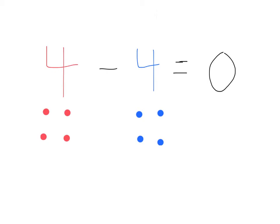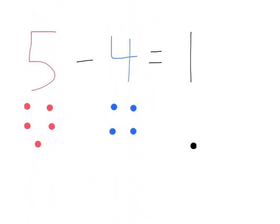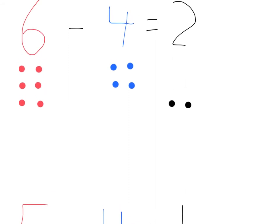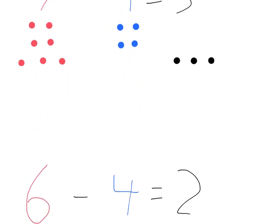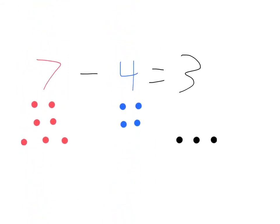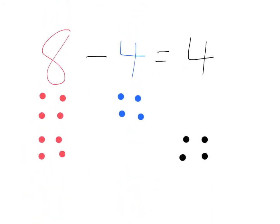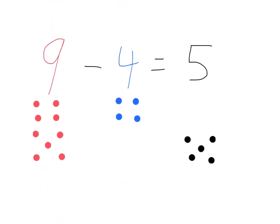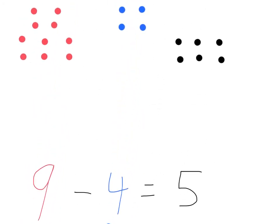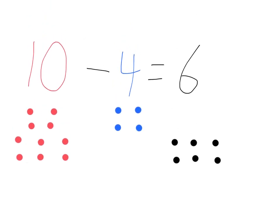Alright, let's go backwards. 4 minus 4 equals 0. 5 minus 4 equals 1. 6 minus 4 equals 2. 7 minus 4 equals 3. 8 minus 4 equals 4. 9 minus 4 equals 5. 10 minus 4 equals 6.